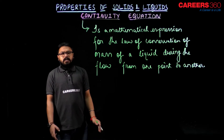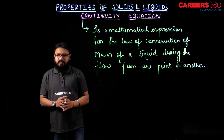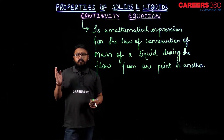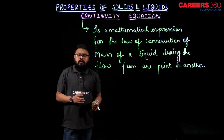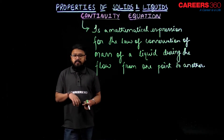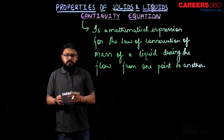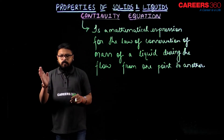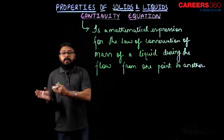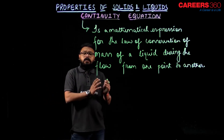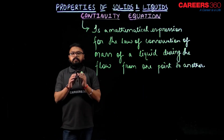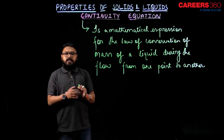Continuity equation is a mathematical expression for the law of conservation of mass of a liquid during the flow from one point to another point. That is, the liquid is flowing in a tube or a pipeline. The pipeline's area of cross section may or may not vary. Whenever the liquid is flowing, the amount of liquid entering any one point would be equal to the amount of fluid exiting or leaving any point in that particular pipeline. So that is nothing but the continuity equation.